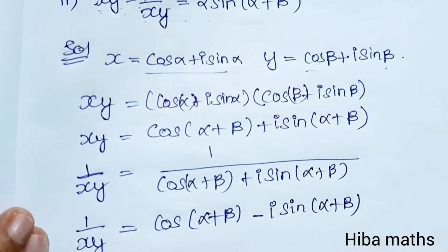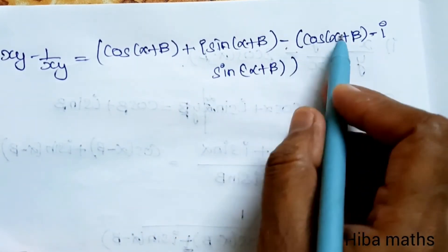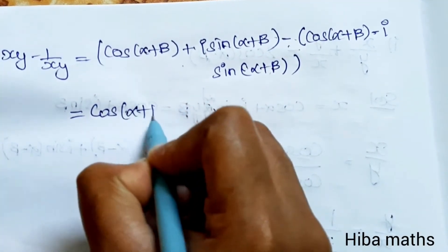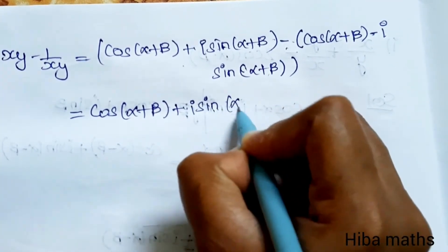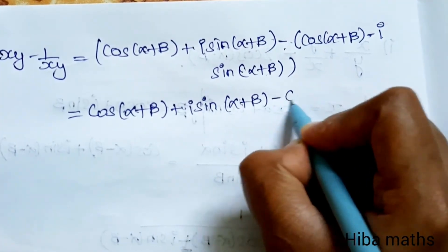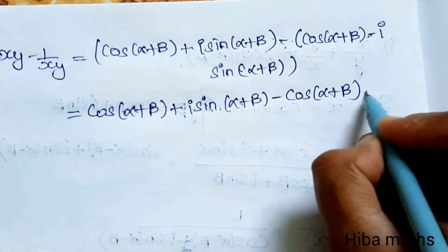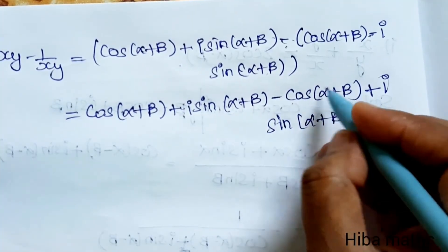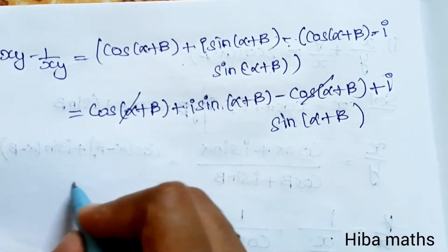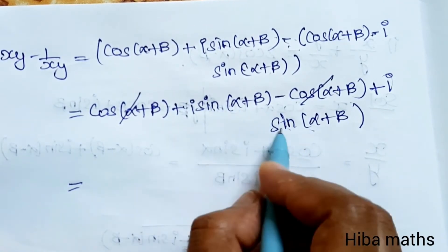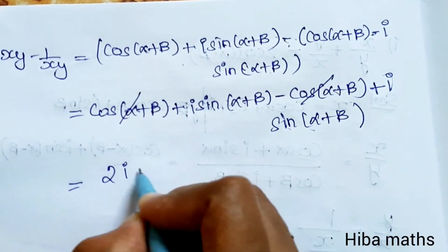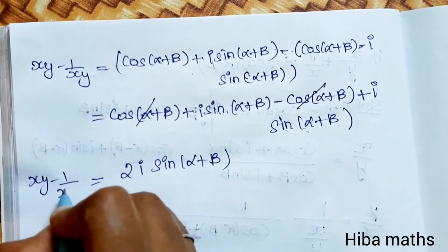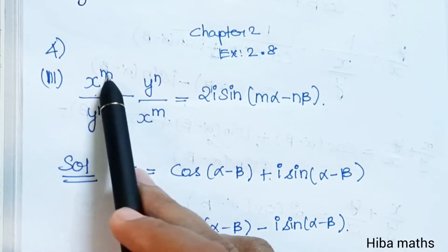So we do xy minus 1/xy. That is cos(α + β) + i sin(α + β) minus cos(α + β) minus i sin(α + β). The cos(α + β) terms cancel, leaving 2 times i sin(α + β). Hence xy minus 1/xy equals 2i sin(α + β). This is our proof.